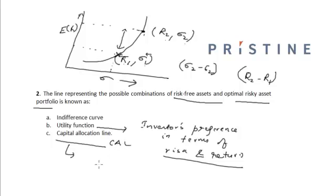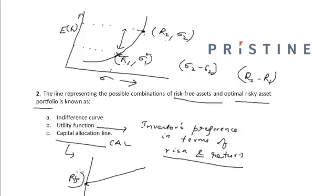The Capital Allocation Line, or CAL, will plot such that when the weight of the optimal risky asset portfolio is equal to zero, the expected return is equal to the risk-free rate of return.